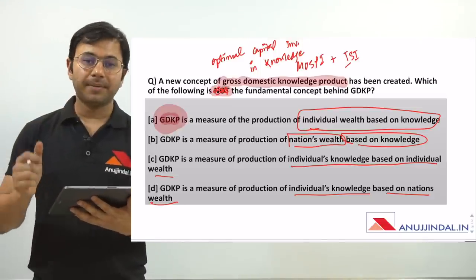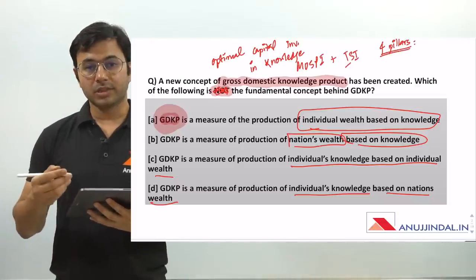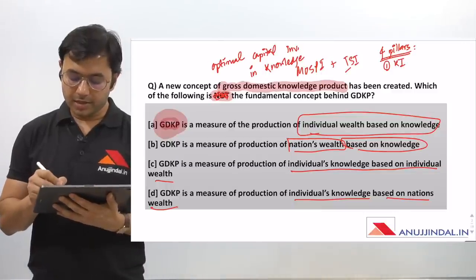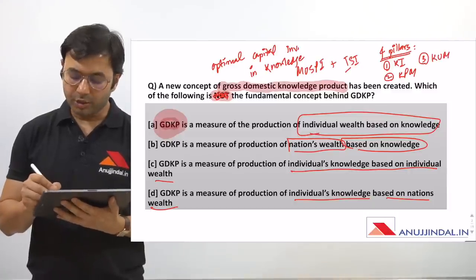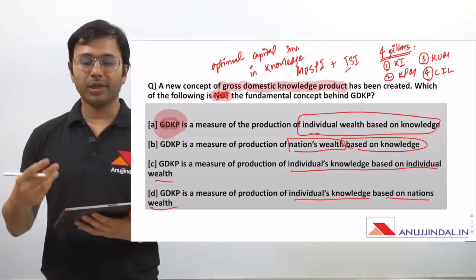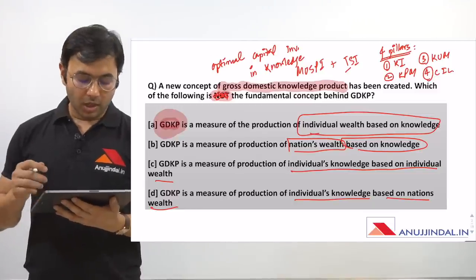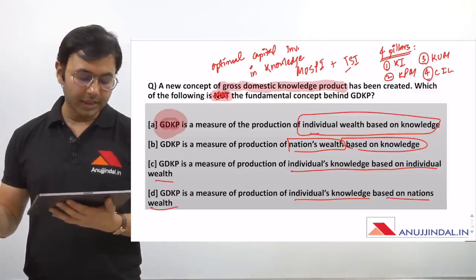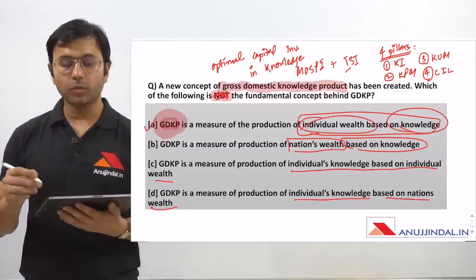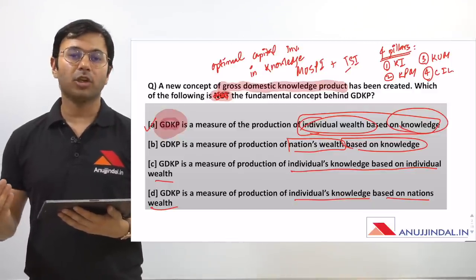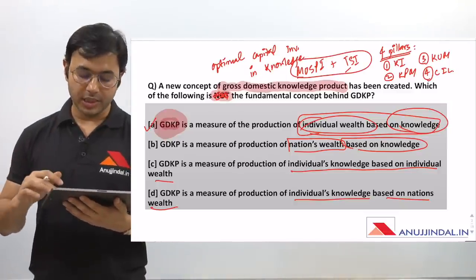The four pillars of GDKP are very important and questions can be asked from these in the examination. The first pillar is Knowledge Items (KI), the second is Knowledge Producer Matrix (KPM), the third is Knowledge User Matrix (KUM), and the fourth is Cost of Individual Learning — what is the cost attached to every individual learning? These are the four important pillars of GDKP. The answer to the first question is A: GDKP is a measure of production of individual wealth based on knowledge — how much wealth can every individual generate based on their knowledge.